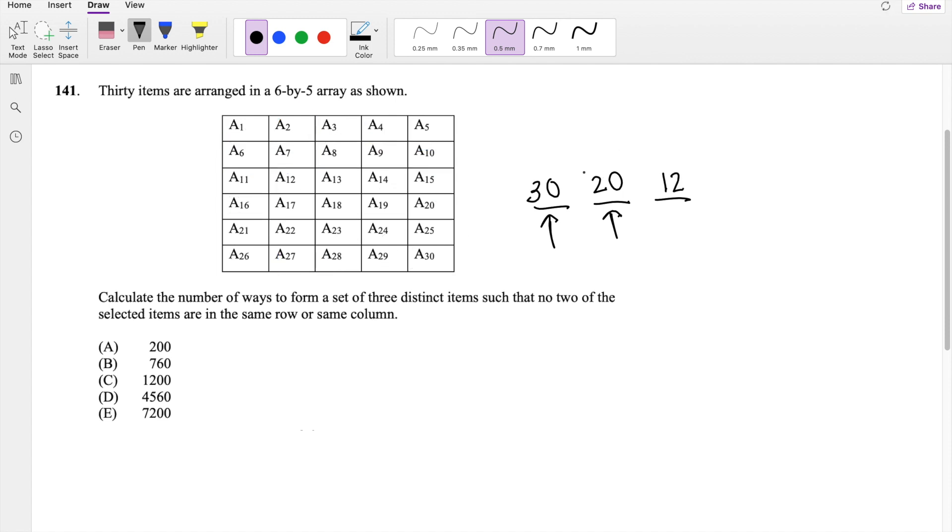But what's a little bit tricky about this question is that the order does not matter. So like let's say I pick this one first, then this one second and this one third. But I can also pick this one first, this one second, and then this one third. So order really does not matter. And how do we make sure that we take out all the repeated ones, the repeated order ones? We just divide by the number of slots. So divide by 3 factorial.